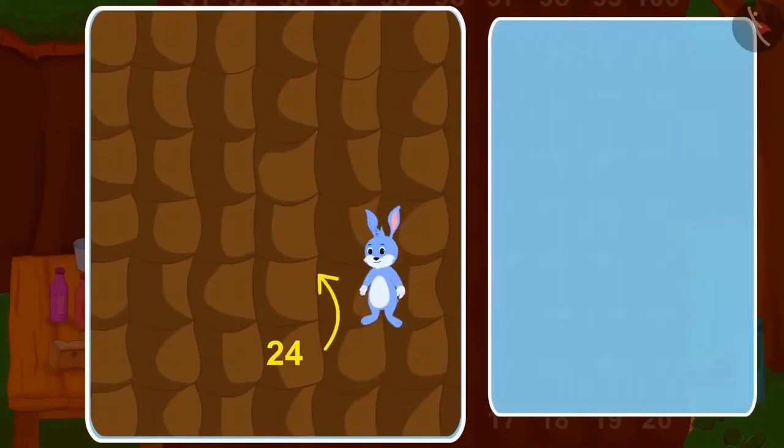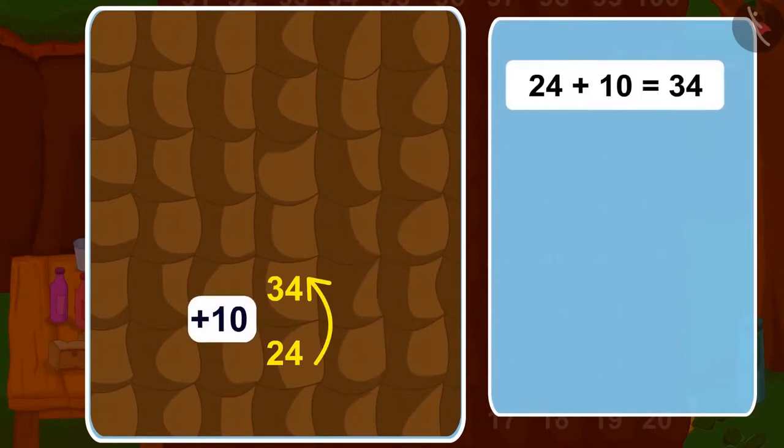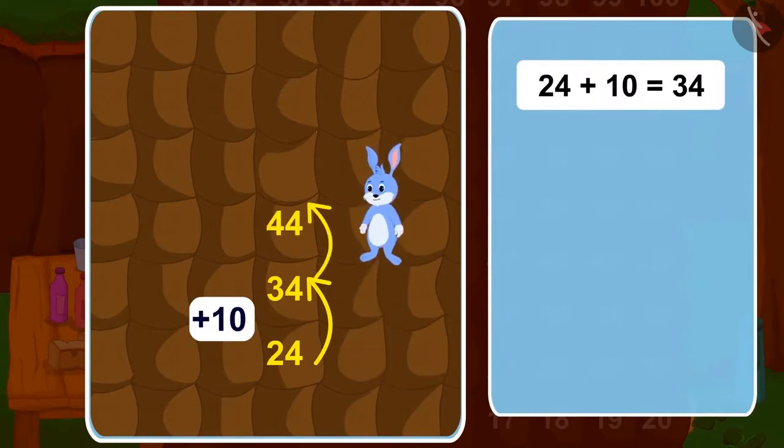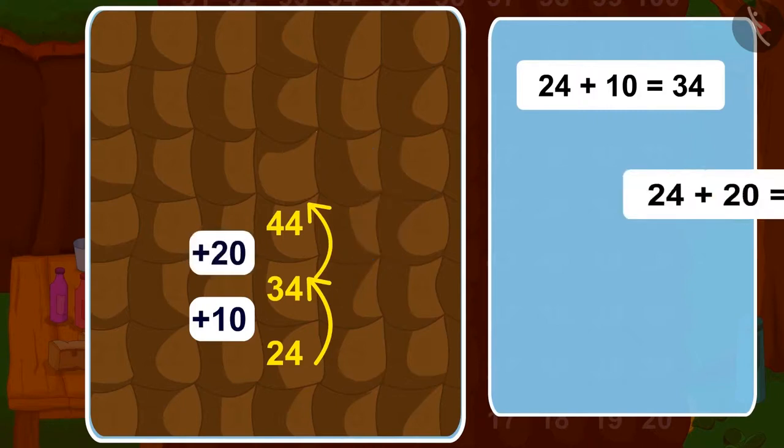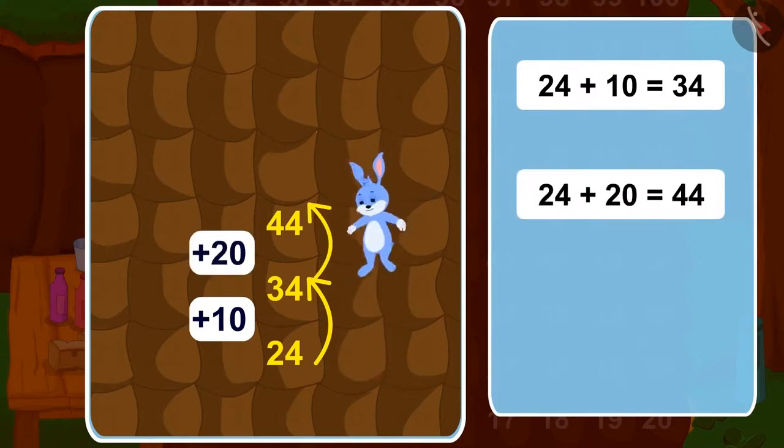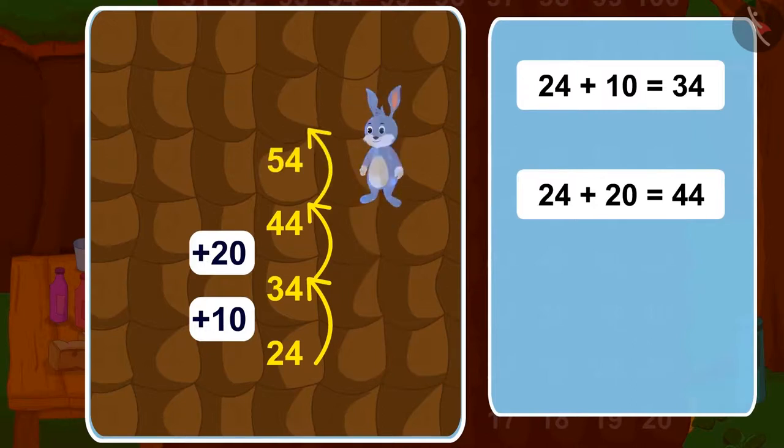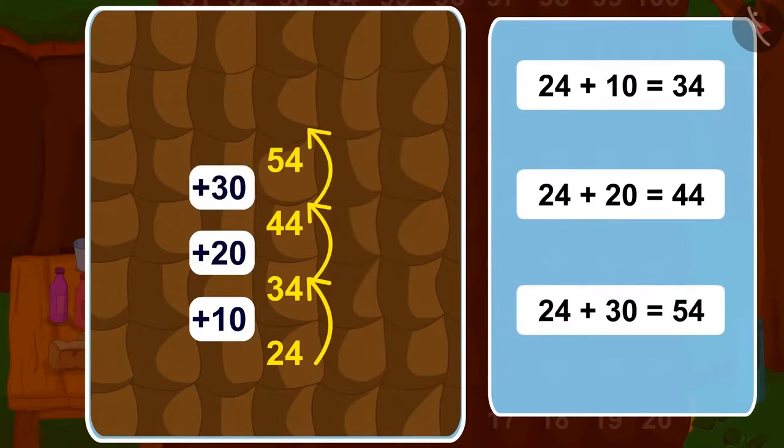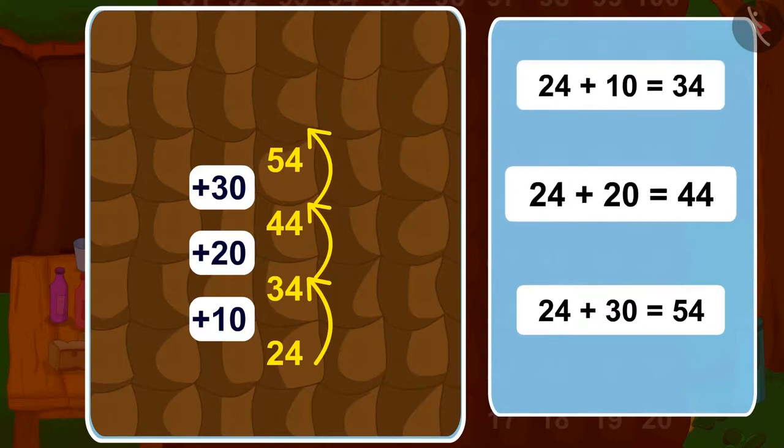In the same way, if we take two jumps above, how many steps will we add? 20. Three jumps up? 30. In this way, one can easily add 10 with every jump up from any room number.